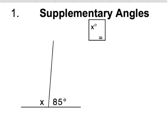Looking at angle properties — supplementary angles. We have angle X which is unknown and we have this angle which is 85 degrees.